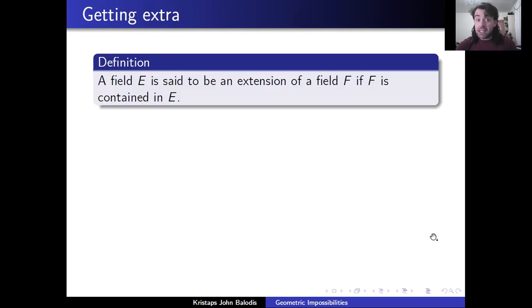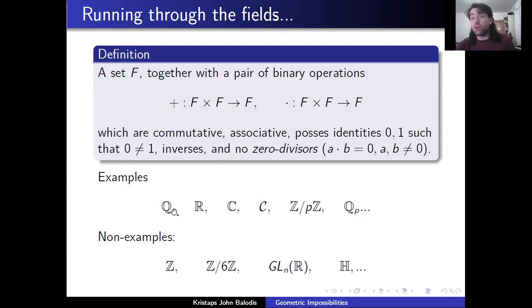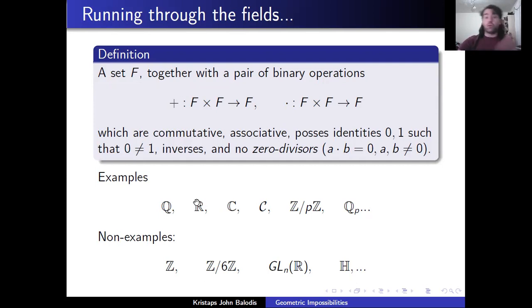So we say that a field E is an extension of a field F if F is contained in E. I know there are some subtleties around what 'contained in' means precisely, but I'm not here to bog people down in too much technical detail. For example, we know that the rational numbers sit inside the reals, and the reals sit inside the complex. So the reals are an extension of the rationals, the complex numbers are an extension of the reals, and therefore also an extension of the rationals.